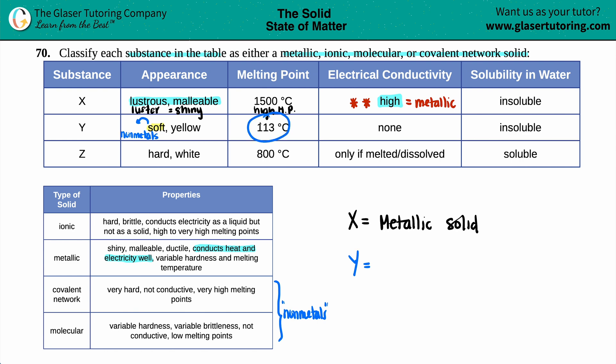Now, they did tell us that it's 113 degrees Celsius is the melting point. If we look at the other ones, 113 is relatively very low. It's a low melting point. It's got no electrical conductivity, and it's insoluble in water. But I'm looking for one of my non-metals that has a very, very low melting point. And if we look at the two of them here, covalent network versus molecular, covalent networks have very high melting points.